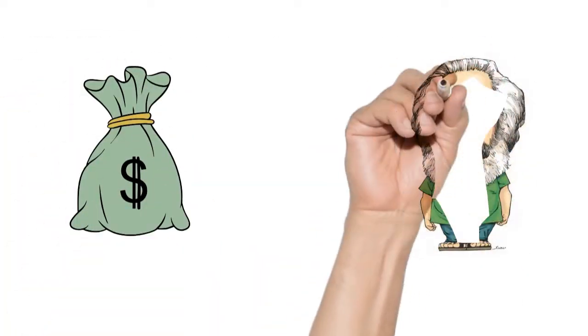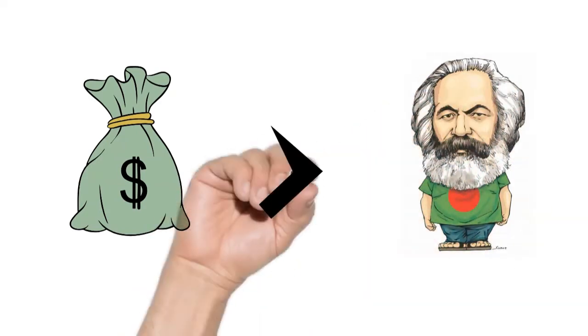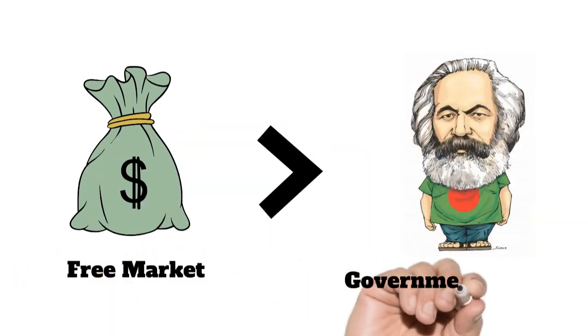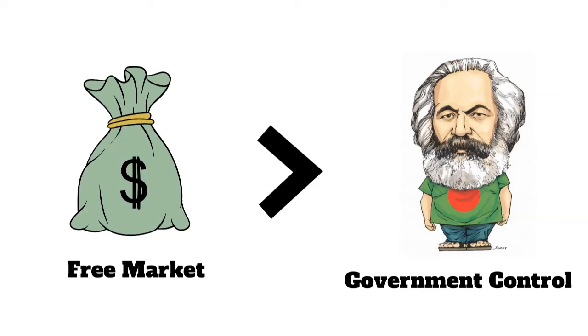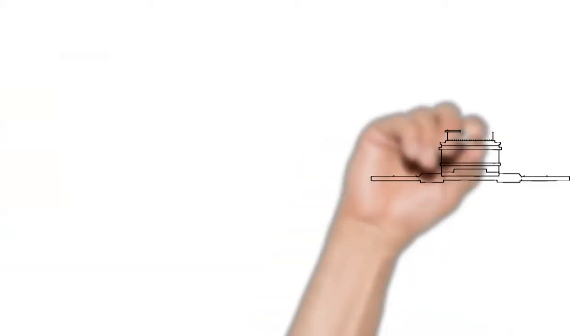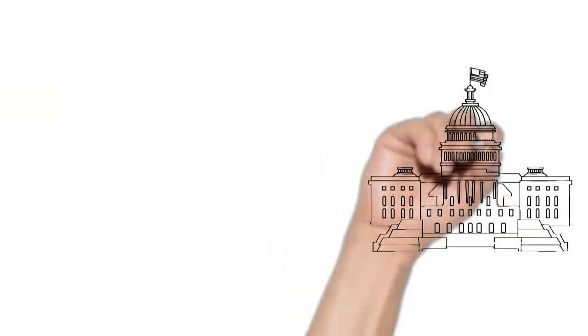Another option is to privatize power utilities and take them out of the control of city councils, which often have their own agenda, and make them more responsive to customers and shareholders.